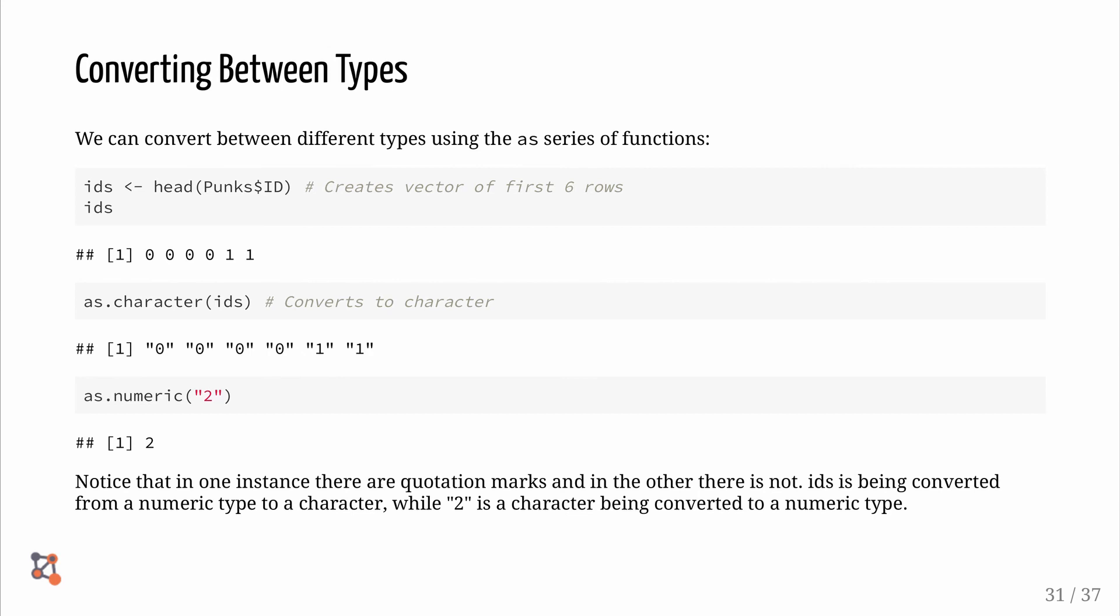We can convert between different types using the as series of functions. First, let's create a vector called IDs, which is the head of the PUNX ID column. Using the as function, we can change the characters. Using the as.character function changes the IDs to characters. Now, we can reverse the change by using the as.numeric function to change them back to numeric. Notice that in one instance, there are quotation marks and the other there are not. IDs is being converted from a numeric type to a character, while two in quotation marks is a character being converted to a numeric type.